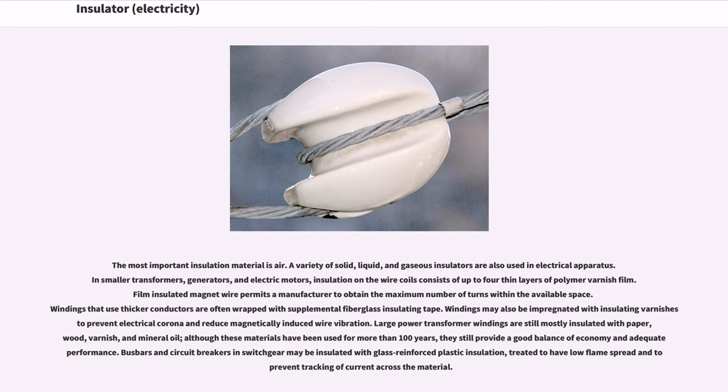A variety of solid, liquid, and gaseous insulators are also used in electrical apparatus. In smaller transformers, generators, and electric motors, insulation on the wire coils consists of up to four thin layers of polymer varnish film. Film-insulated magnet wire permits a manufacturer to obtain the maximum number of turns within the available space. Windings that use thicker conductors are often wrapped with supplemental fiberglass insulating tape. Windings may also be impregnated with insulating varnish to prevent electrical corona and reduce magnetically induced wire vibration.